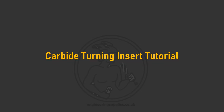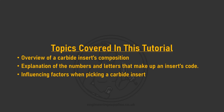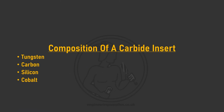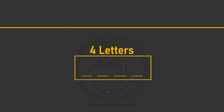In this video we are going to be looking at turning inserts. We'll look at a quick overview of what a carbide turning insert is, what all the letters and numbers of an insert code stand for, and what they mean when picking an insert. A carbide insert consists of a mix of tungsten, carbon, silicon, and cobalt.